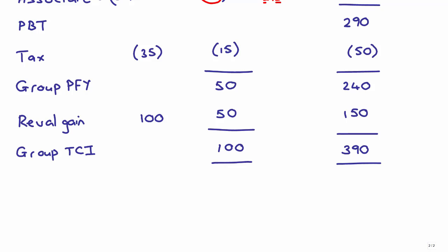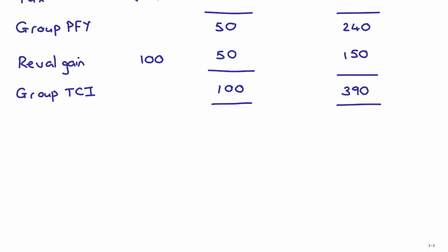That 390 needs to be split. I'm just going to split the total comprehensive income into the amount attributable to the parent and the amount attributable to the NCI. We own 80% of the sub, so we take 20% NCI. 20% of the 100 gives me 20. The amount attributable to the parent is the balancing figure: 390 less 20, which gives 370.